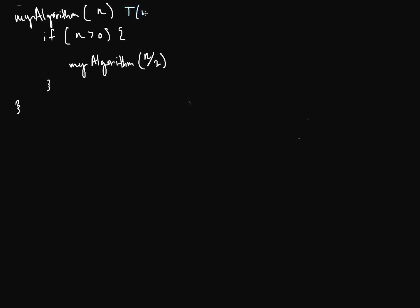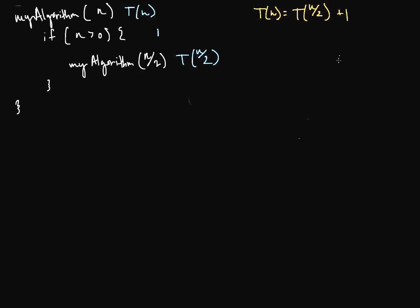We've been denoting our time complexities with T of n, so our algorithm should run in some sort of T of n. Our function is going to look like T of n equals something. We can see that this runs once any time it is called, and then we have a recursive call where the input is half the size of our original. So it will be T of n over 2, plus 1.